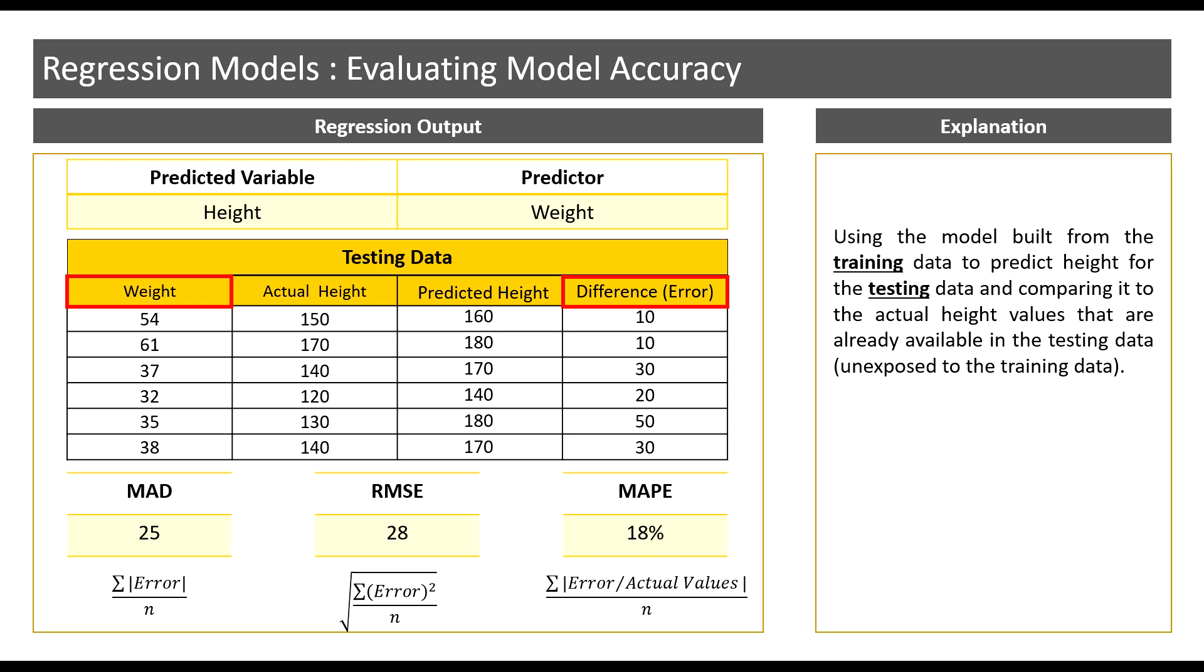Now let us move on to RMSE. Here we see that the RMSE is 28. It suggests that next time I use this model to predict height, I may be off by approximately 28 centimeters. So the RMSE is similar to MAD, but it penalizes the model further. In other words, it is just a stricter measure.